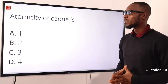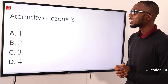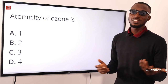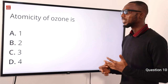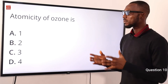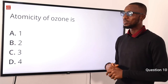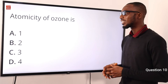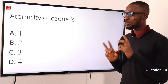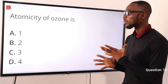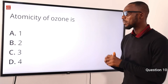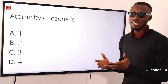Question 10. The atomicity of ozone is what? That tells you the number of atoms present in ozone. We know oxygen gas is diatomic — that is O2, two atoms. For ozone, it is O3 — three atoms of oxygen.